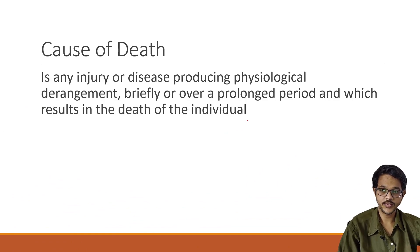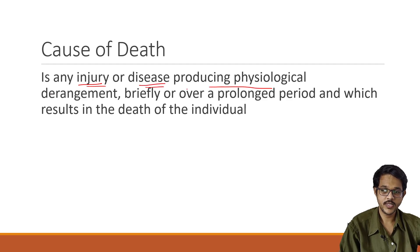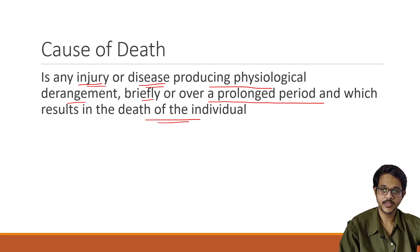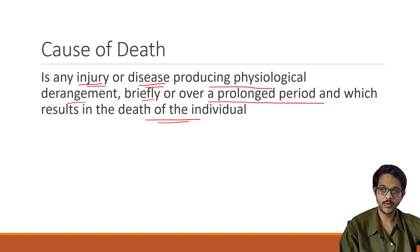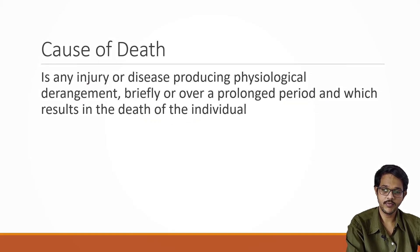First we discuss about cause of death. Cause of death is any injury or disease producing physiological derangement, briefly or over a prolonged period, which results in death of an individual. So cause of death is the cause which has led the person to death — mainly an injury or a disease which produces physiological derangement in the body.